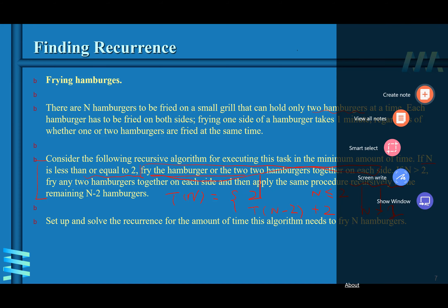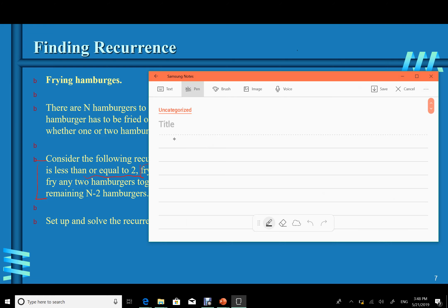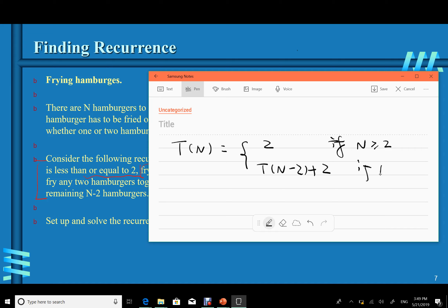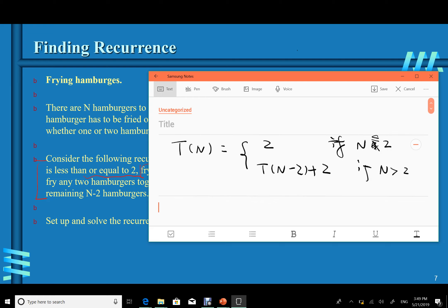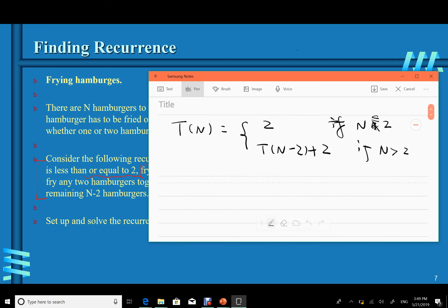This problem can be formulated with the recurrence relation: T(n) = 2 if n ≤ 2; T(n) = T(n−2) + 2 if n > 2. Note that not all recurrence relations can use the master method — master method only applies when the format is T(n) = a·T(n/b) + f(n). In this case, we must use substitution.